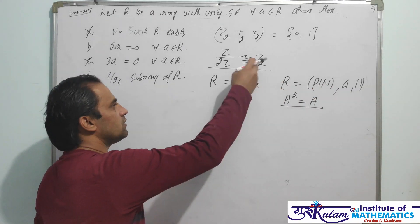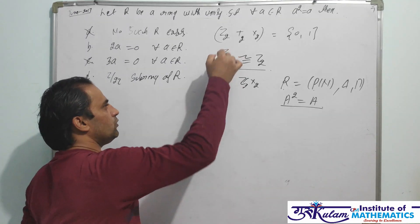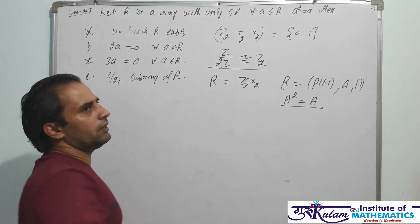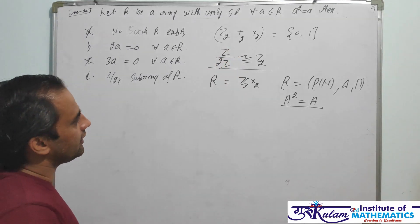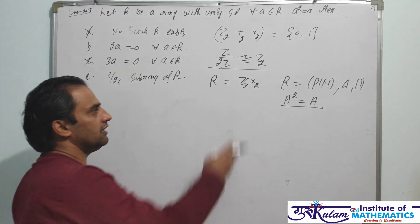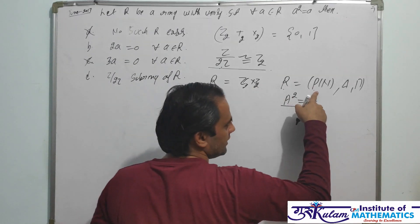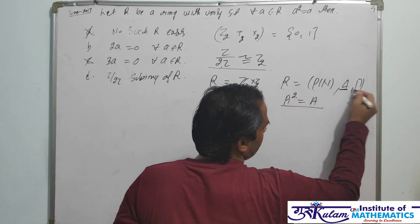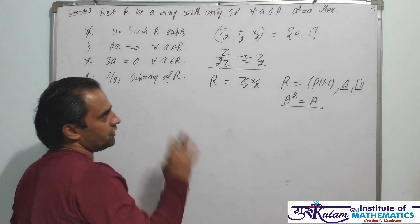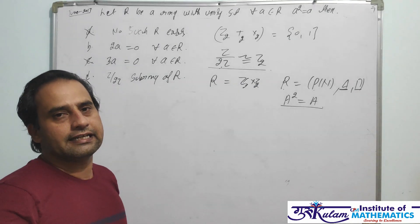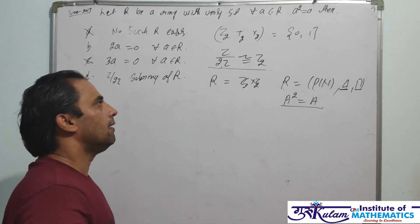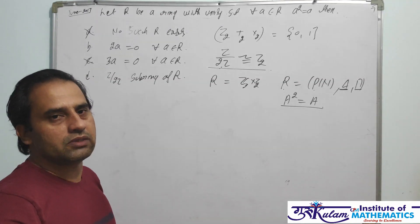These both rings satisfy this property. But Z by 2Z, the operation in Z by 2Z is addition of quotients and multiplication of quotients. But in this ring, simple component-wise addition and component-wise multiplication. And in this ring, operations are symmetric difference and intersection.